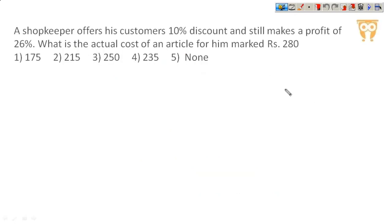A shopkeeper offers customers 10% discount and still makes a profit of 26%. What is the actual cost of an article for him marked Rs. 280? So if you have the basics, then you will find this an easy question. Rs. 280 marked price is the article. We have 10% discount and still 26% profit. I will just explain this to you.